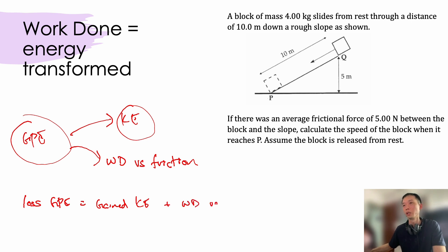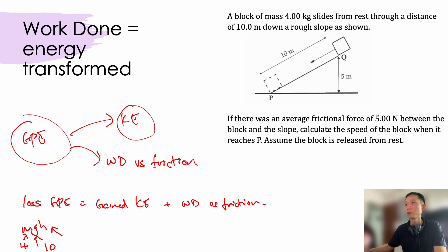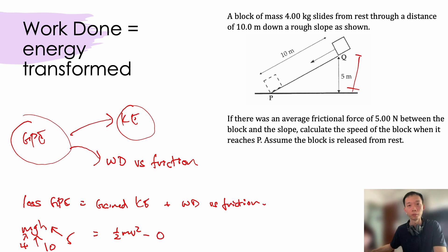We can now construct an equation: loss in GPE equals gain in KE plus work done against friction. Loss in GPE is m × g × h, where m is 4 kg, g is 10, and h is the vertical height of 5 m. For gain in KE, it's important to note we are talking about an increase, so we write: final KE (½mv²) minus initial KE. We must always remember to subtract the initial KE.